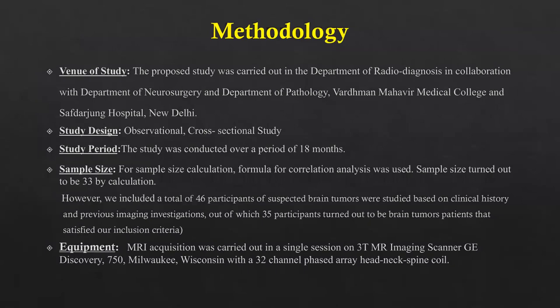The study was conducted in the Department of Radio Diagnosis in collaboration with the Department of Neurosurgery and Department of Pathology, VMMC and Sabta Jung Hospital. It was an observational cross-sectional study conducted over a period of 18 months. The sample size was calculated using a formula for correlation analysis, yielding 33; however, we included a total of 46 participants with suspected brain tumors based on clinical history and previous imaging investigations, out of which 35 participants turned out to be brain tumor patients satisfying our inclusion criteria.